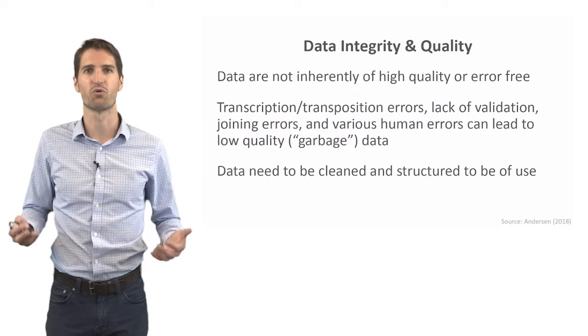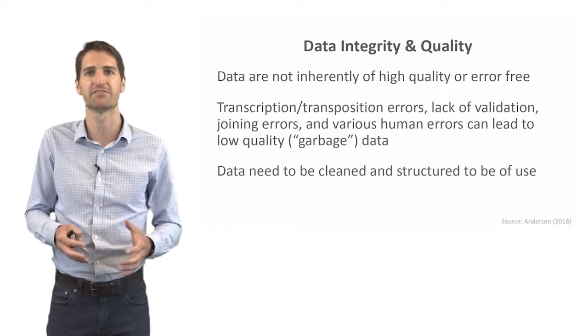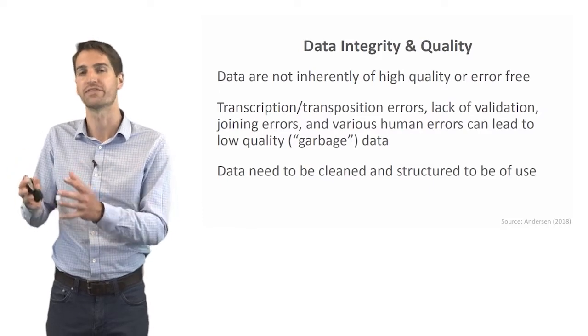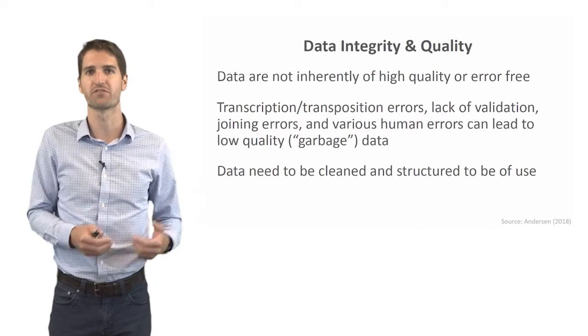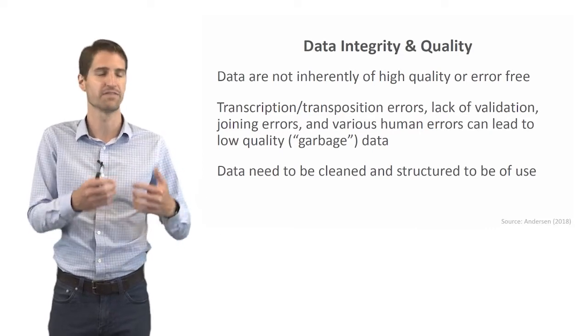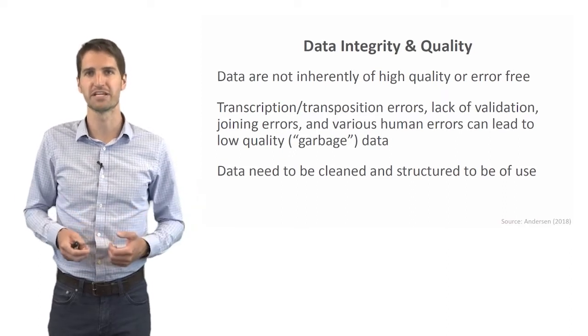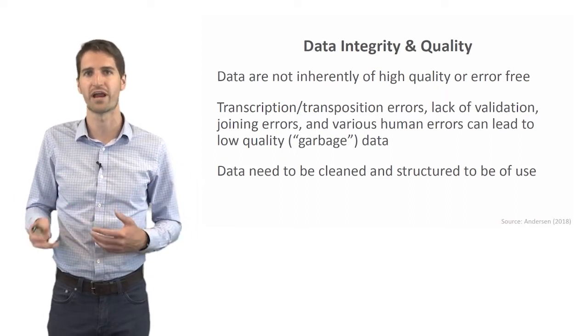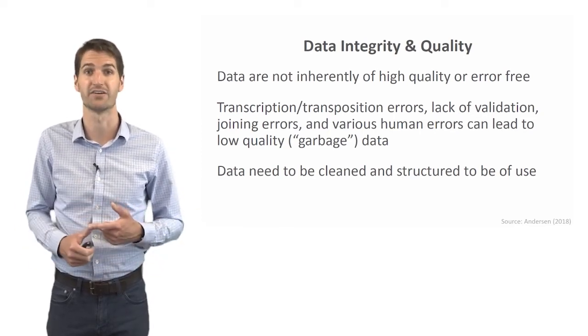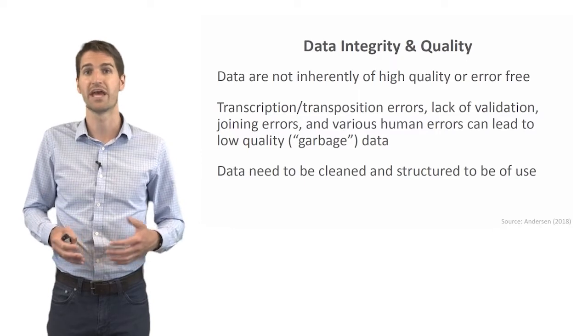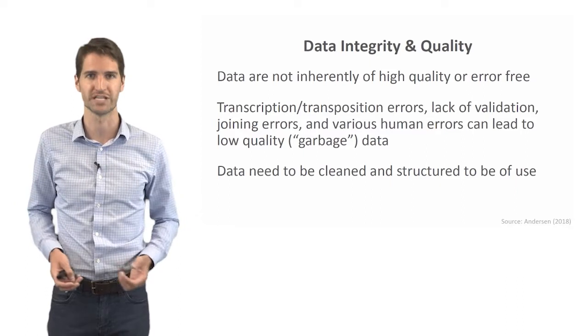So when we think about data integrity and quality, we need to think that data in and of themselves are not inherently of high quality or necessarily error-free. In fact, sometimes we think this is a numeric form, it's data and therefore it must have some kind of value. It must be of high quality, but it doesn't necessarily mean it's accurate. There's all sorts of ways for errors to creep in. And so these could include transcription and transposition errors, a lack of validation, joining errors, and a number of different various human errors that can lead to low quality or garbage data.